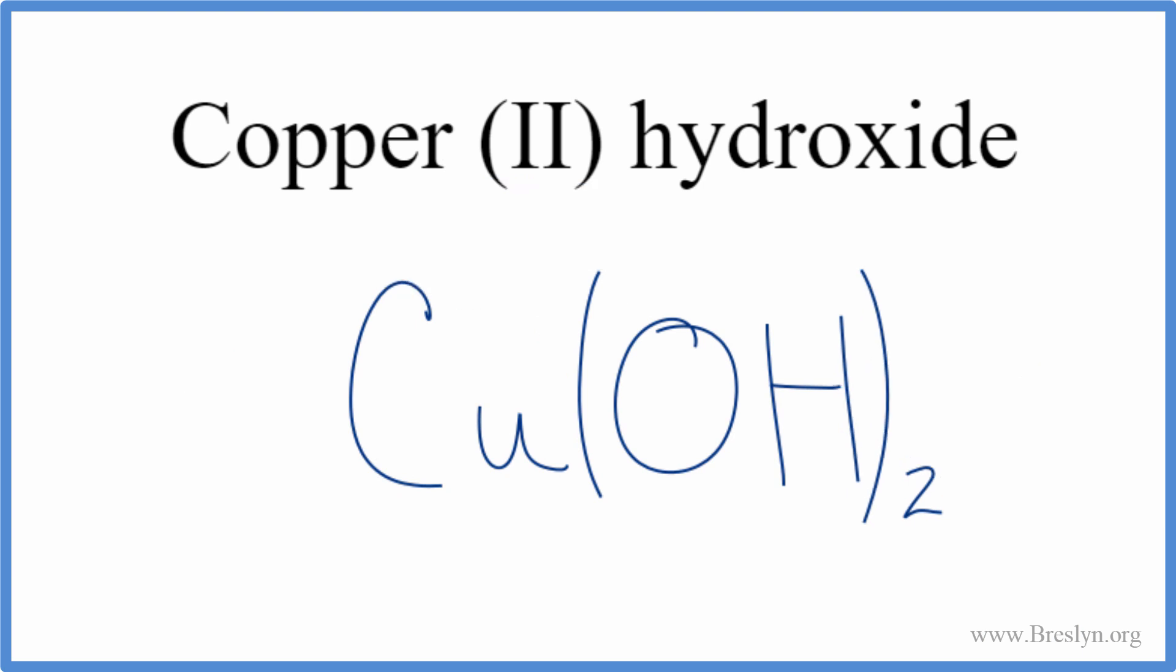Let's clean it up. That's the formula for copper (II) hydroxide: Cu(OH)₂. This is Dr. B, thanks for watching.